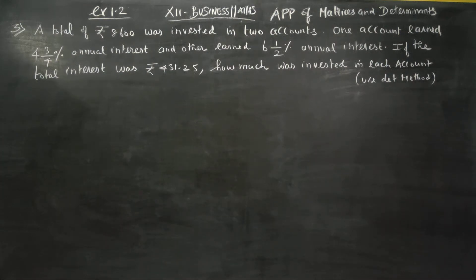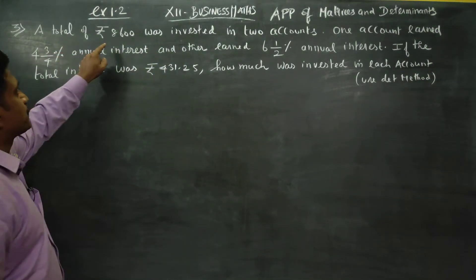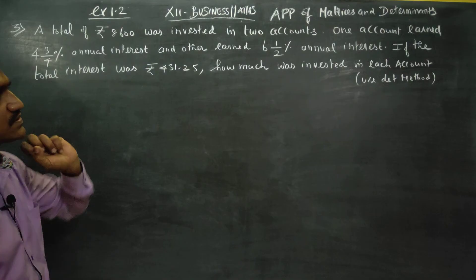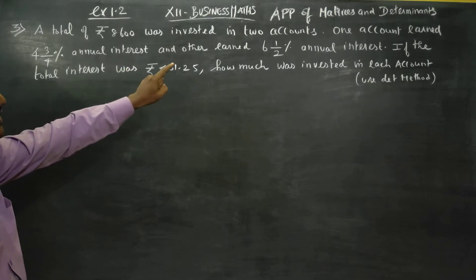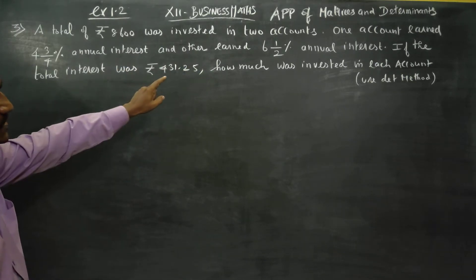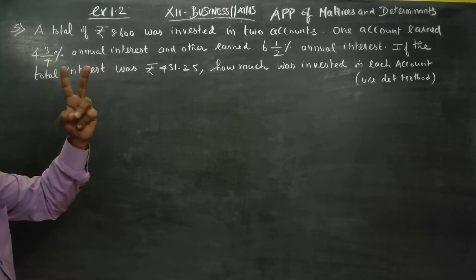Hello dear Business Maths students. In 12th standard, Chapter 1, Exercise 1.2, Sum number 3 - a total of Rs.8600 was invested in two accounts. One account earned 3¾% annual interest and the other earned 6½% annual interest. If the total interest was given, how much was invested in each account?